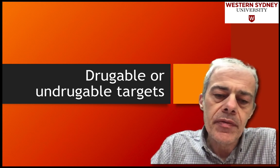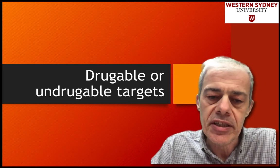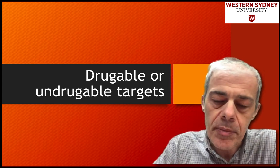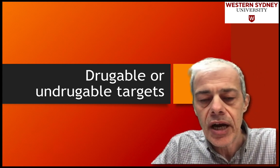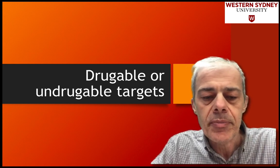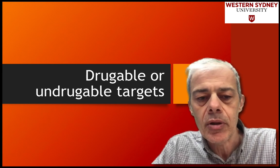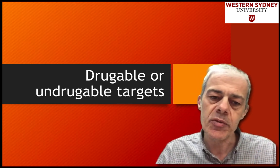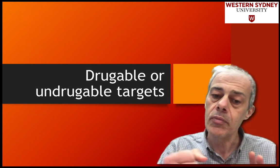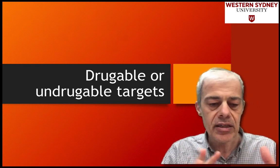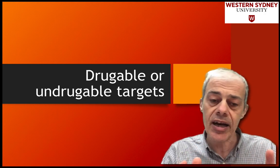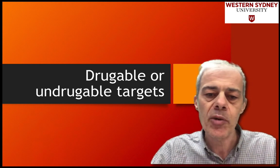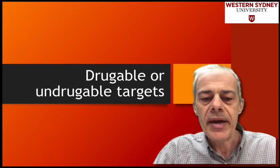Now we've been looking at some of the proteins in the cell that are involved in cell signaling pathways, and we've discussed what function they play in a pathway and whether they're good targets for drugs. Now we'll look at this concept of whether a protein is druggable or undruggable — will it respond to a small organic molecule that's the drug, or is there nowhere in the protein we can make a drug work?